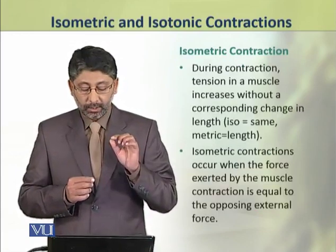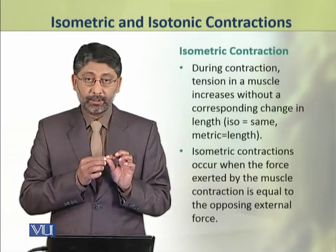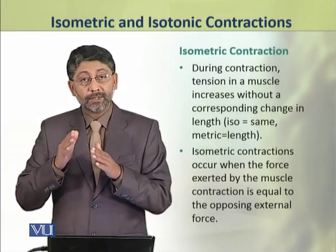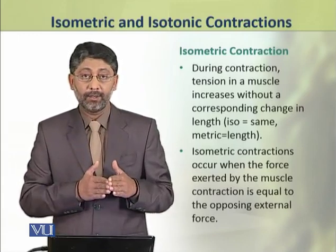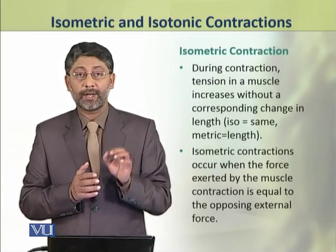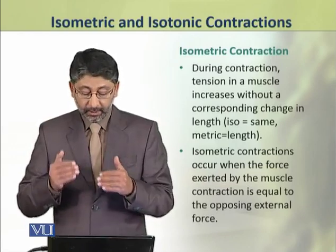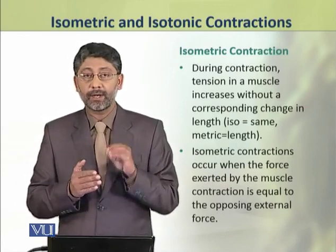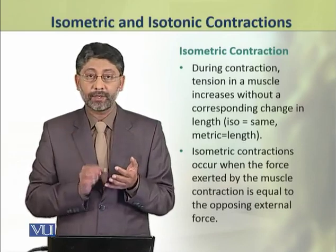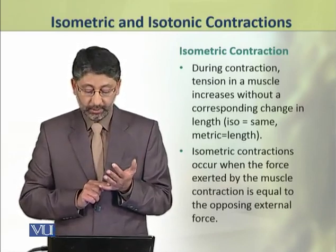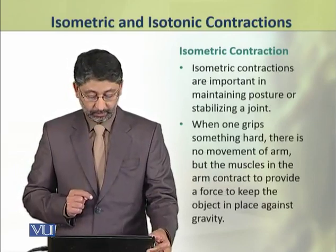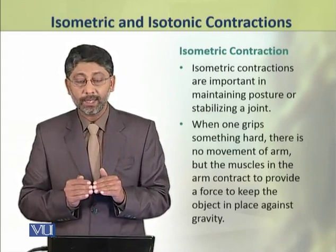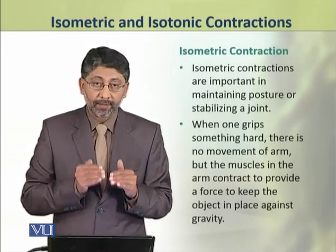Dear students, a contraction during which the tension in the muscle increases but there is no change in the length of the muscle — such contractions are called isometric contractions. Iso means same and metric means length, that is, length remains constant. Isometric contractions occur when the force exerted by the muscles is equal to the opposing external force. These isometric contractions are important in maintaining posture and stabilizing a joint.